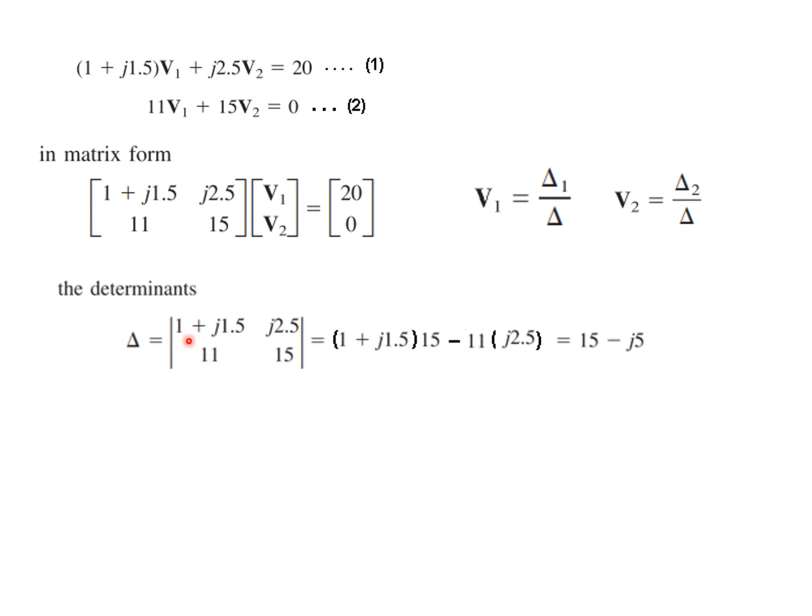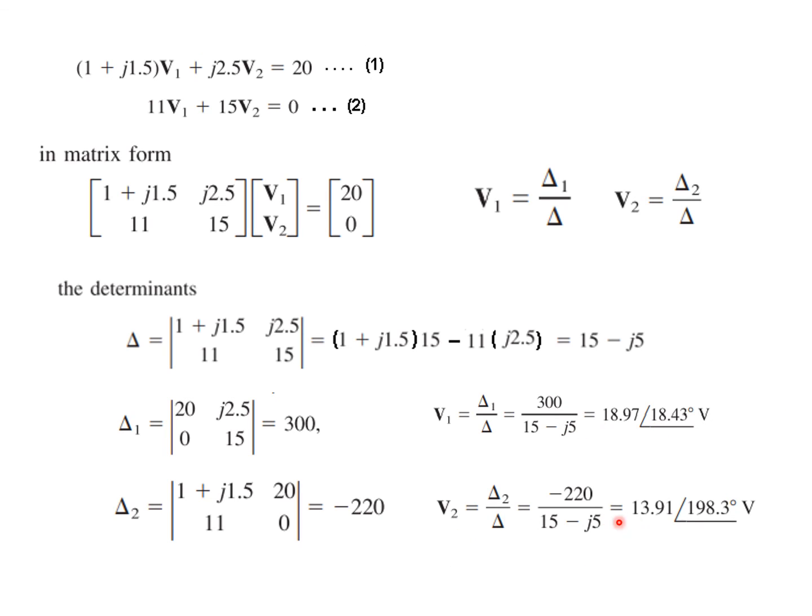This determinant is known as delta—we solve by cross multiplying using a calculator in complex mode. For delta 1, we replace the first column with the output variable and solve. For delta 2, we replace the second column and solve. Putting in the values, v1 and v2 are found. These are the values of v1 and v2.